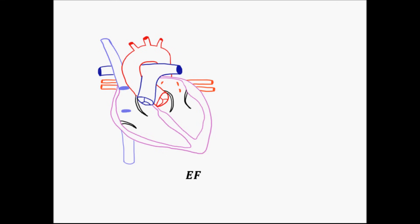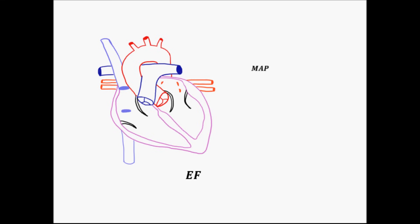In hemodynamics, the key endpoint is organ perfusion, and this is driven by mean arterial pressure. This is the reason why we measure non-invasive blood pressure. Two-thirds the diastolic plus one-third the systolic — otherwise stated as two times the diastolic plus the systolic divided by three — is equal to mean arterial pressure. Mean arterial pressure has two main components: cardiac output and systemic vascular resistance.